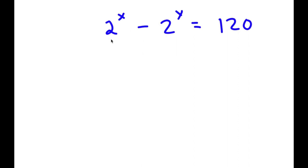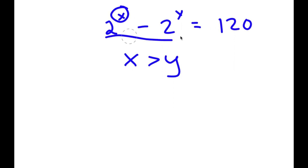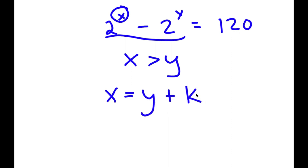In this problem, I have 2 to the power of x minus 2 to the power of y is equal to 120. Just looking at this problem, we can see that x is going to be greater than y. Because if x were less than y, this would result in a negative number. Since x is greater than y, x is going to equal y plus some constant k.